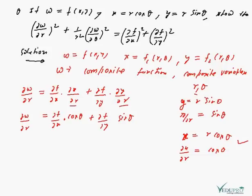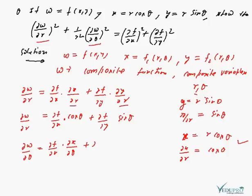Now looking at the given relation, ∂w/∂r is on the left-hand side, meaning the left-hand side is what we derived automatically. The second part in the left-hand side of the relation is (1/r)∂w/∂θ. Since w is a composite function and θ is a composite variable, we can compute it.